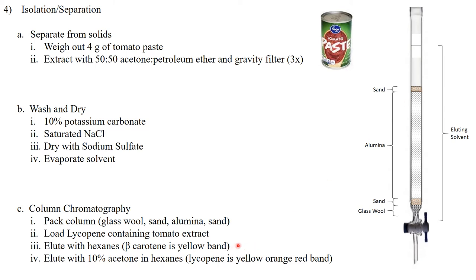We're first going to elute with hexanes, which tends to move beta-carotene faster than lycopene. Once we get the beta-carotene to move through the column, then we're going to add a little bit of acetone to our hexanes, which tends to move lycopene through that column.